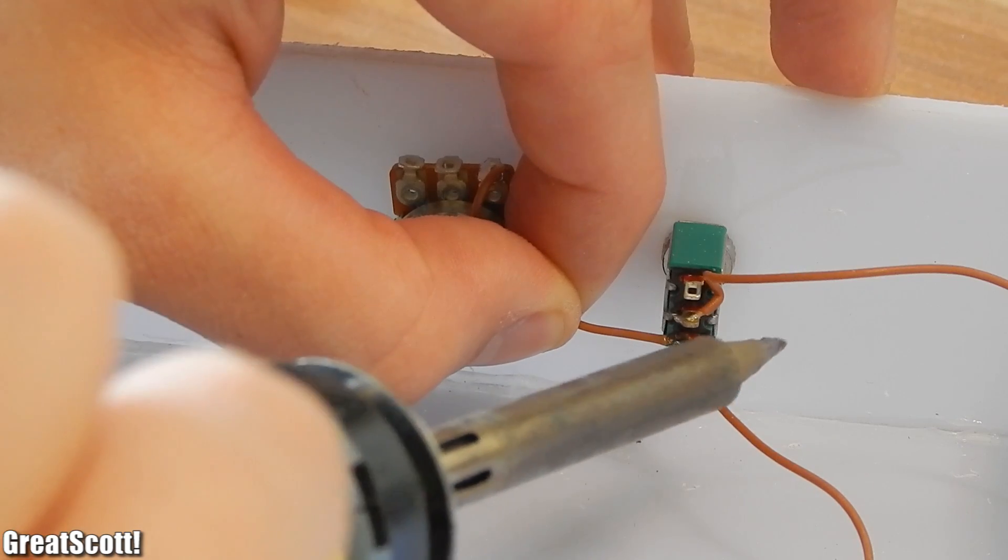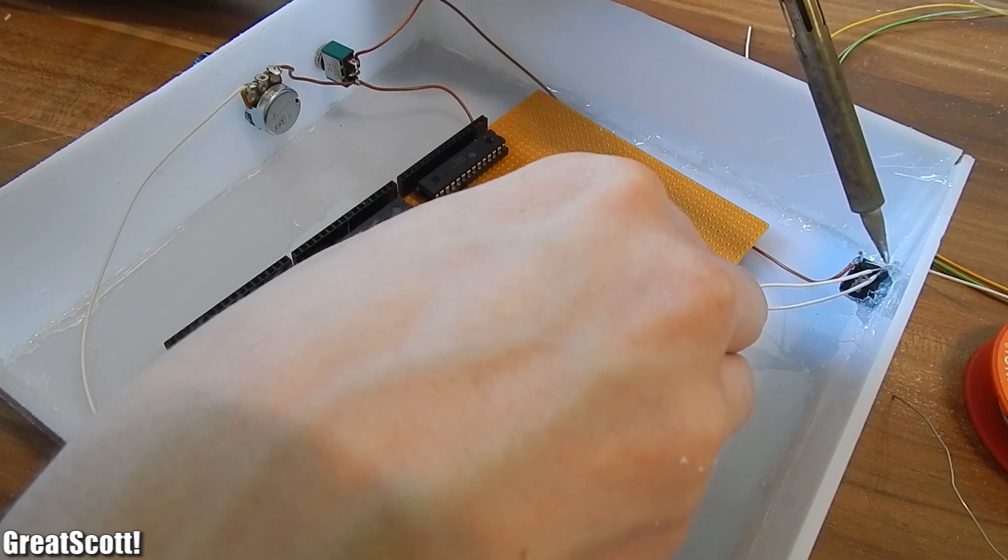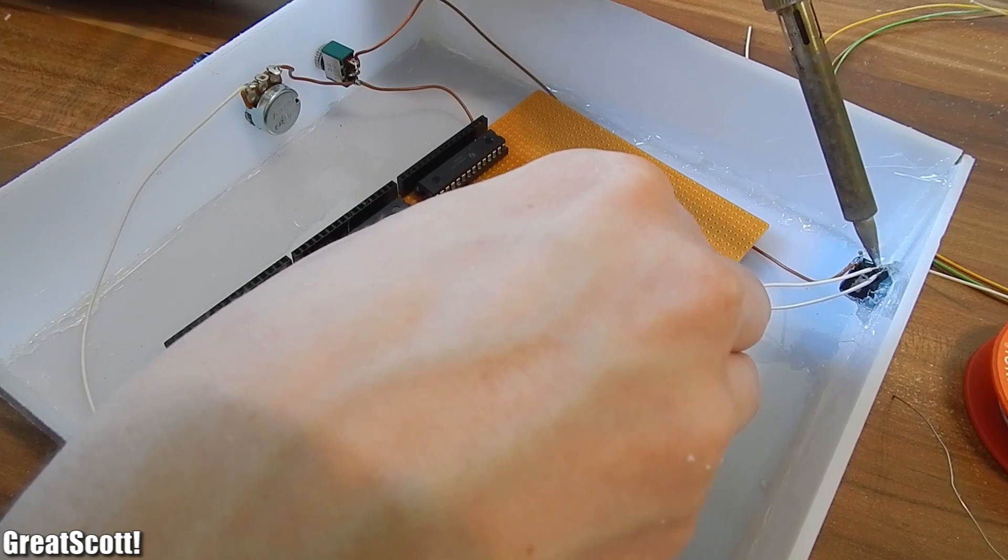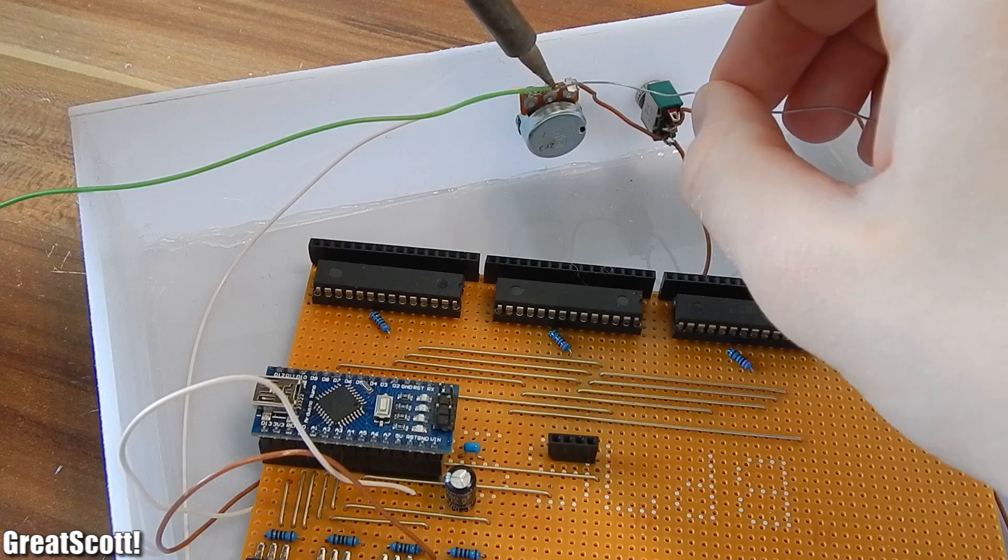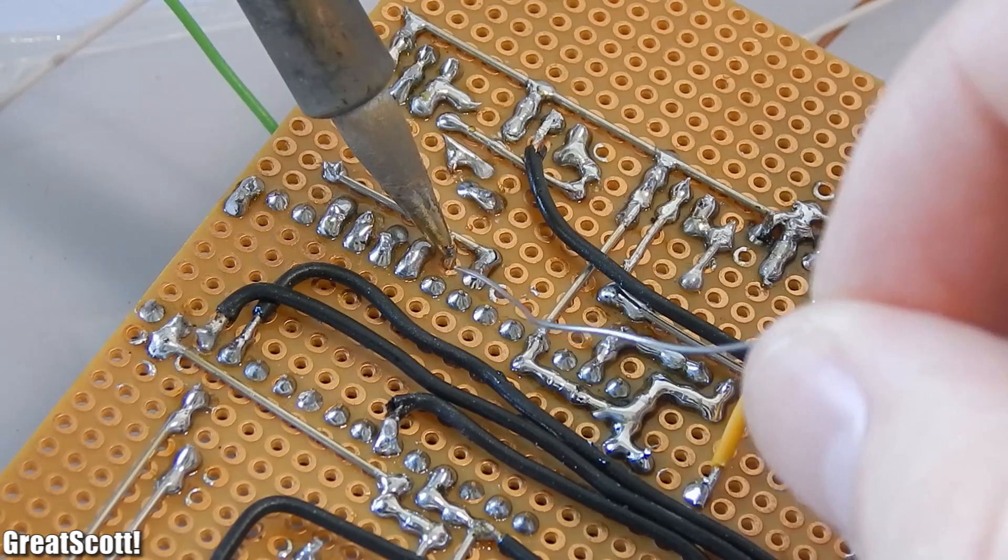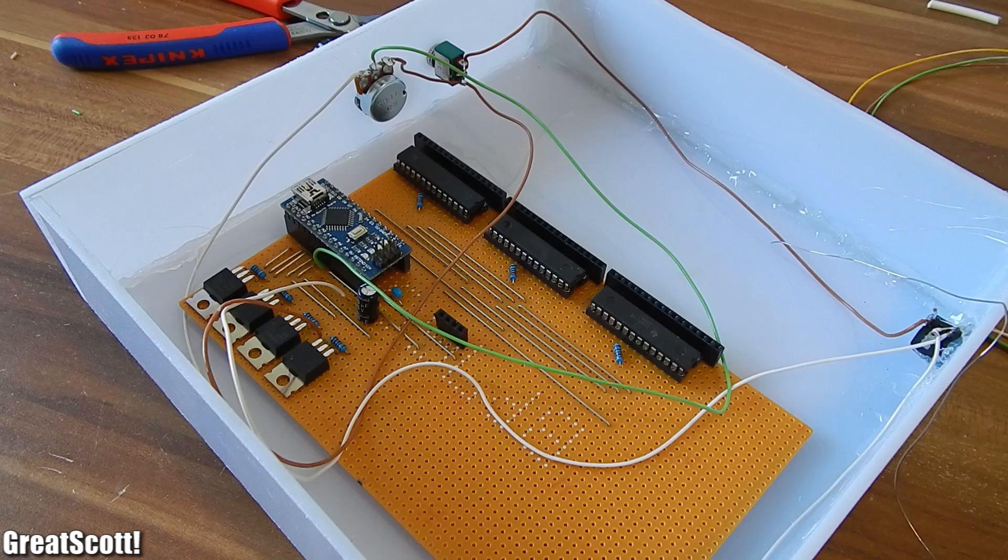One side of the potentiometer connects to 5V at the switch and the other side connects directly to ground at the DC jack. The middle pin connects to analog pin 4 of the Arduino. And that's it.